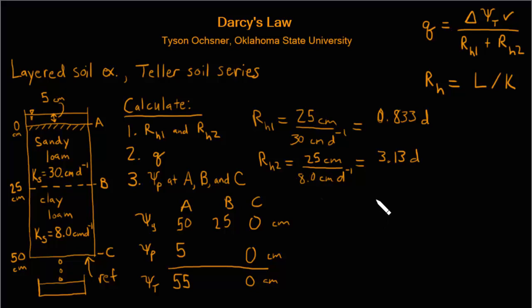Now we're ready to calculate the flux Q. So the flux Q then is simply given by our difference in soil water potential from point A to point C which in this case is 55 centimeters, divided by the sum of these two hydraulic resistances. So divided by 0.833 plus 3.13. The units are days on both of those.